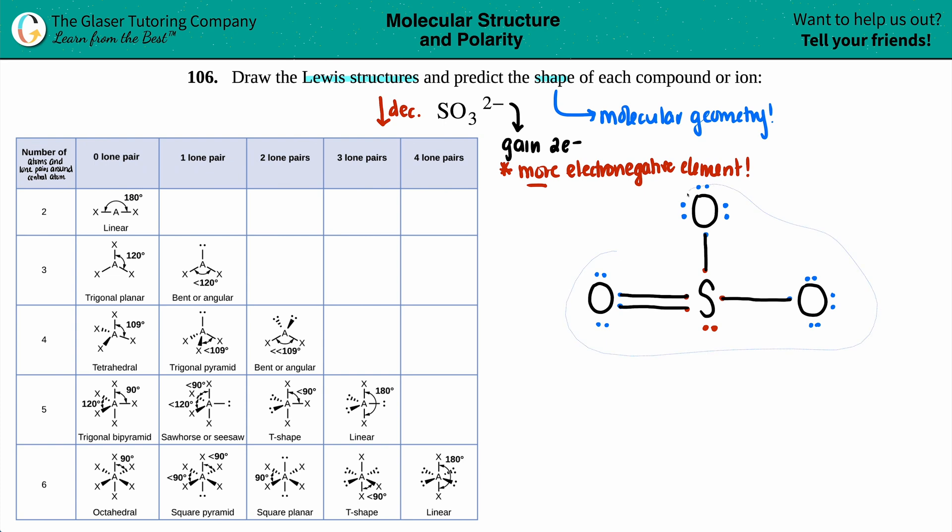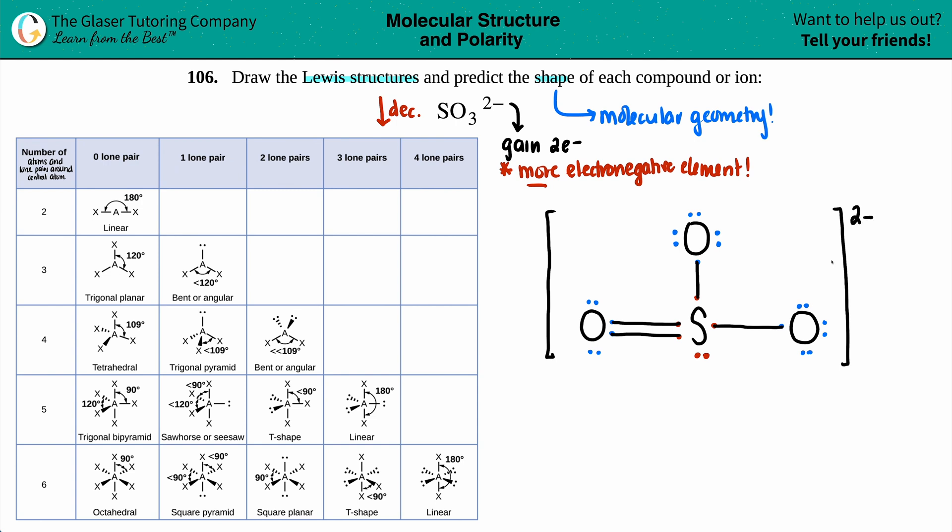And I'm just going to pull this down a little bit. Now, since we had a charge, we just have to clearly state that we did gain two electrons, so we just put this bracket here and say 2-minus. Now the Lewis structure is 100% perfect. Now we're going to use this chart to basically find the shape, and the molecular geometry or the shape always comes from the central atom. So once again, we are looking at sulfur.